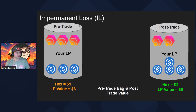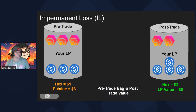We have our pre-trade bag — the tokens the liquidity provider has before the trade happens — and the liquidity pool after the trade. Before the trade, HEX is at $1, and the total liquidity value is $6 because each HEX is $1, so $3 plus $3 equals $6. Afterwards, the liquidity provider has two HEX tokens and four USDC tokens. HEX is now $2, so four plus four equals $8.